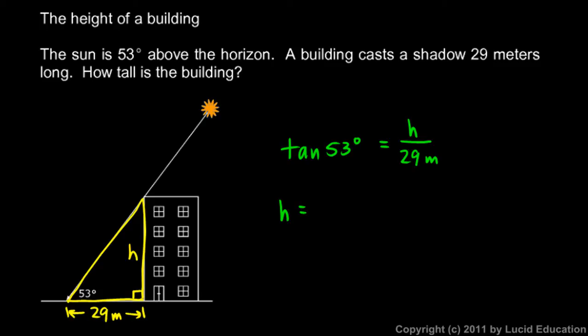Then we can just take this equation and rearrange it algebraically to solve for h. So basically, we just multiply both sides by 29 meters. So h ends up being 29 meters times the tangent of 53 degrees. And we do that on the calculator, just 29 times the tangent of 53. Make sure the calculator is in degree mode, and we get an answer. This comes out to 38.5 meters.